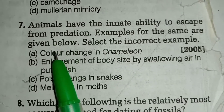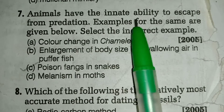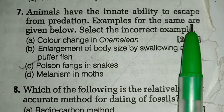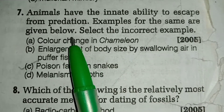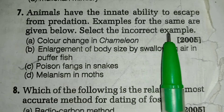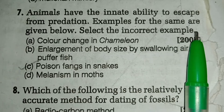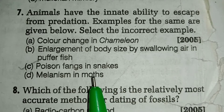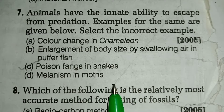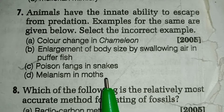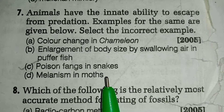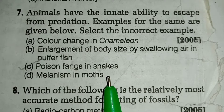Question number seven: animals have the innate ability to escape from predation; examples are given below — select the incorrect example. The answer is option number C, poison fangs in snakes. Animals resist predation by cryptic coloration, deceptive marking,